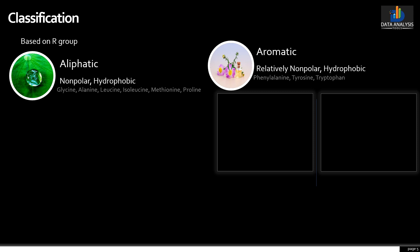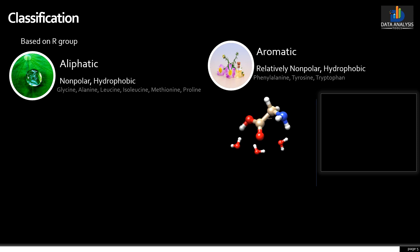An aromatic amino acid is an amino acid that includes an aromatic ring at the side chain. Phenylalanine, tyrosine, and tryptophan, with their aromatic side chains, are relatively nonpolar or hydrophobic. As we can see, they can participate in hydrophobic interactions by repelling water molecules.